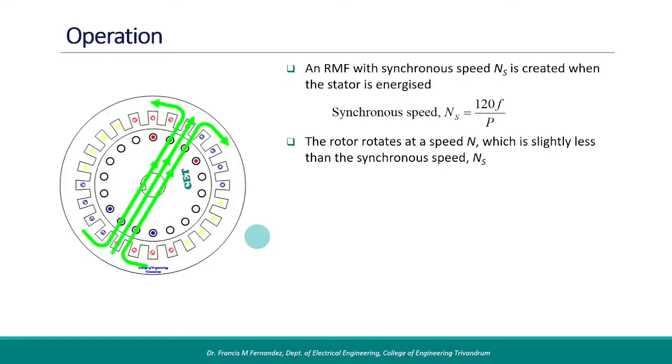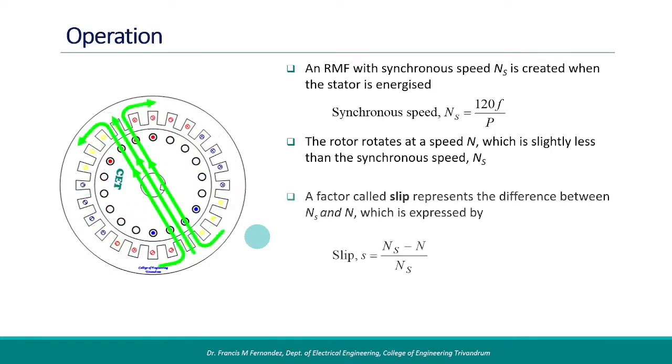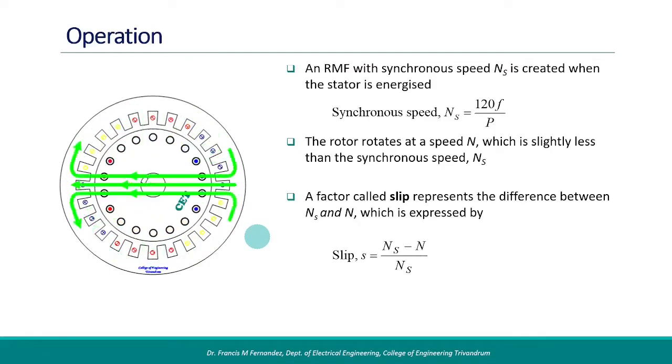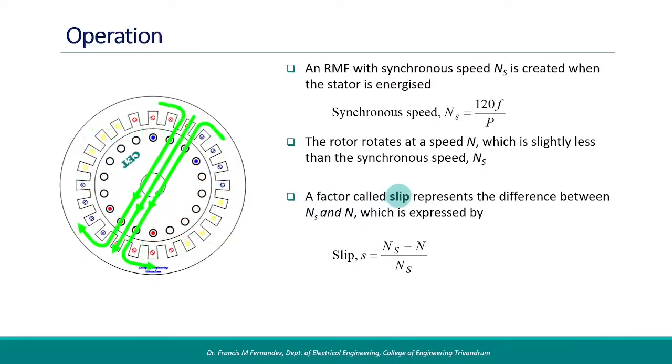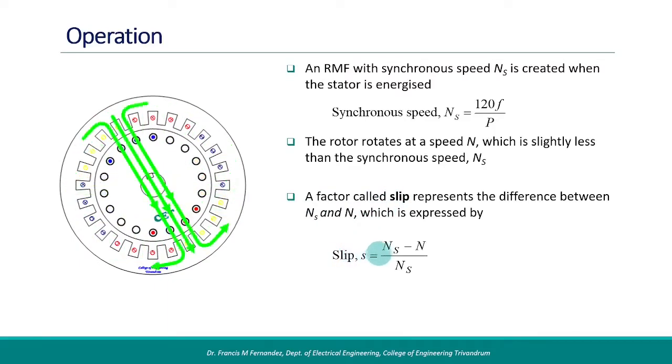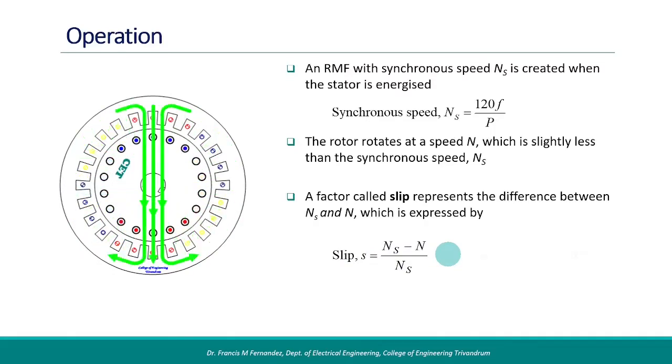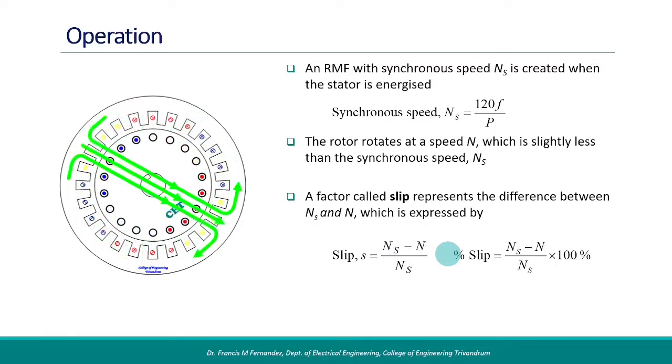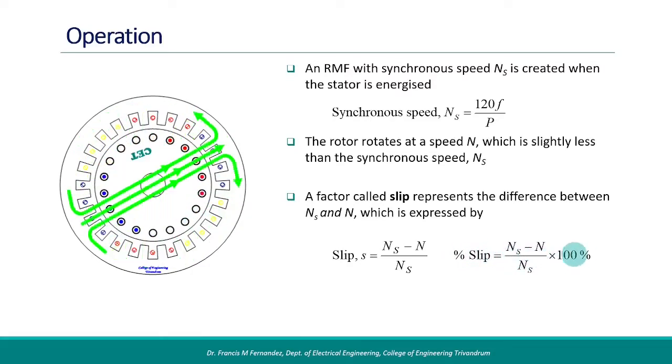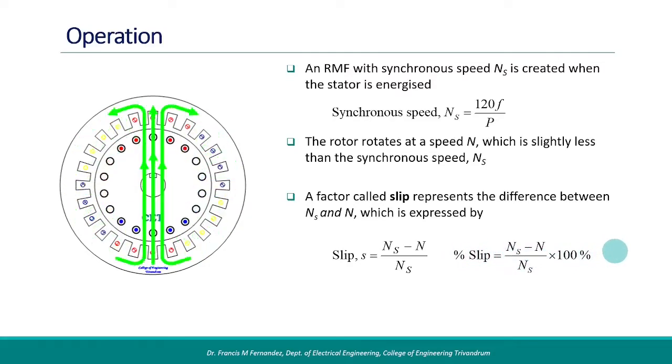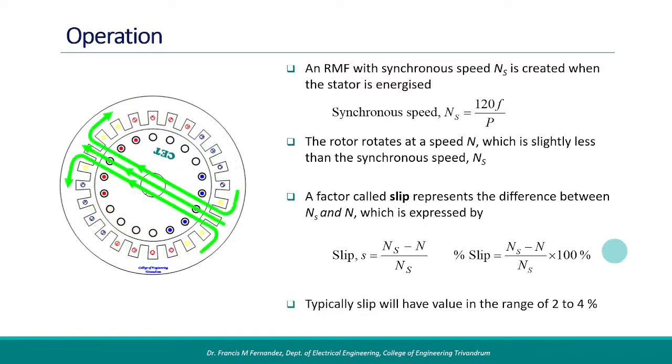The difference in speed is represented by a term called slip. The expression for slip is Ns minus N by Ns. It is a common practice to represent slip as a percentage value. Typical value of slip varies in the range of 2 to 4%.